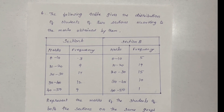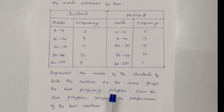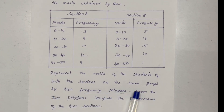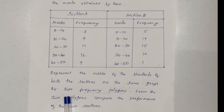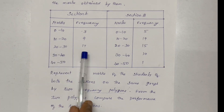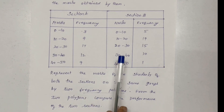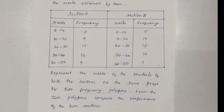Next, represent the marks of the students of both the sections on the same graph by two frequency polygons — Section A and Section B. From the two polygons, compare the performance of the two sections.